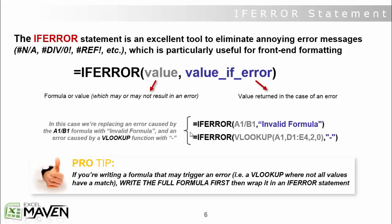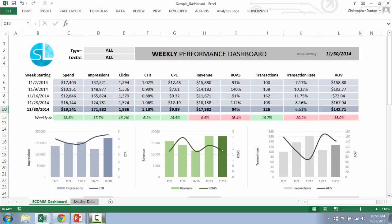After the value, you have the value-if-error piece — this is just what you want to return in the case of an error, in place of the error message. For example, if A1 is divided by B1 and B1 might be zero, you can say instead of giving me a DIV/ZERO, return the text string "invalid formula". Or if you get an error running a VLOOKUP, just show a dash in quotes, which is a lot cleaner. Pro tip: write the full formula first, then wrap it in an IFERROR statement — otherwise things can get complicated quickly with longer nested functions.